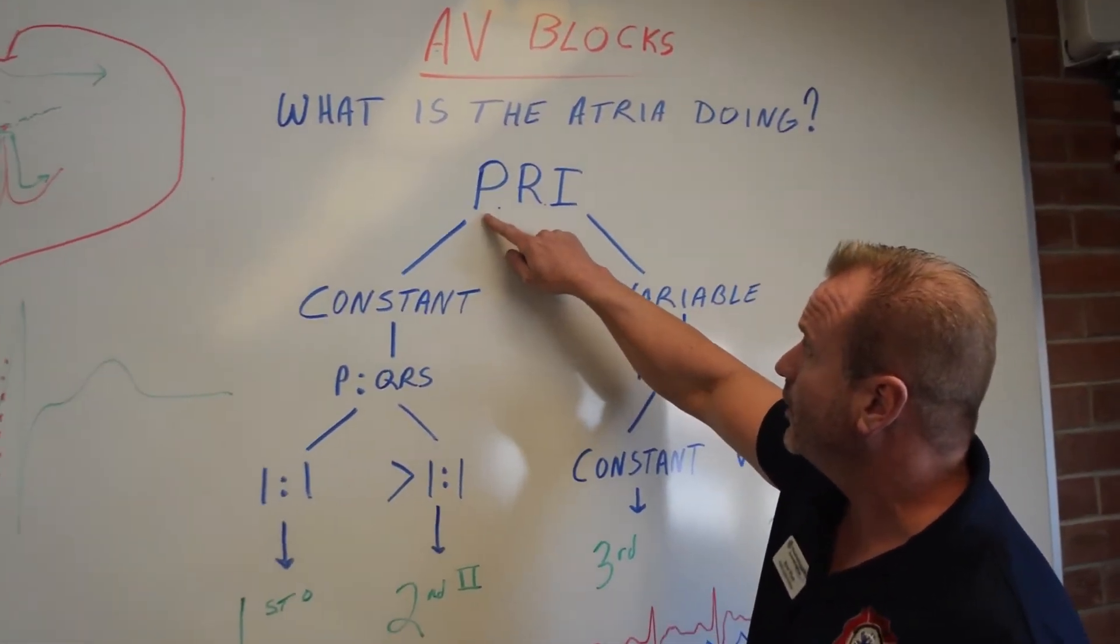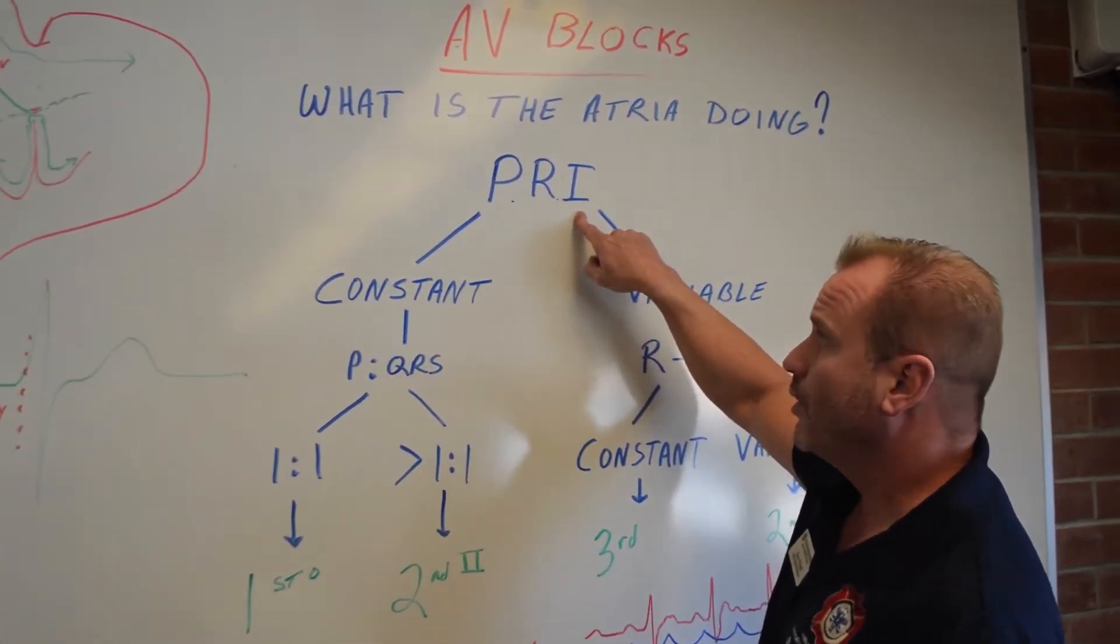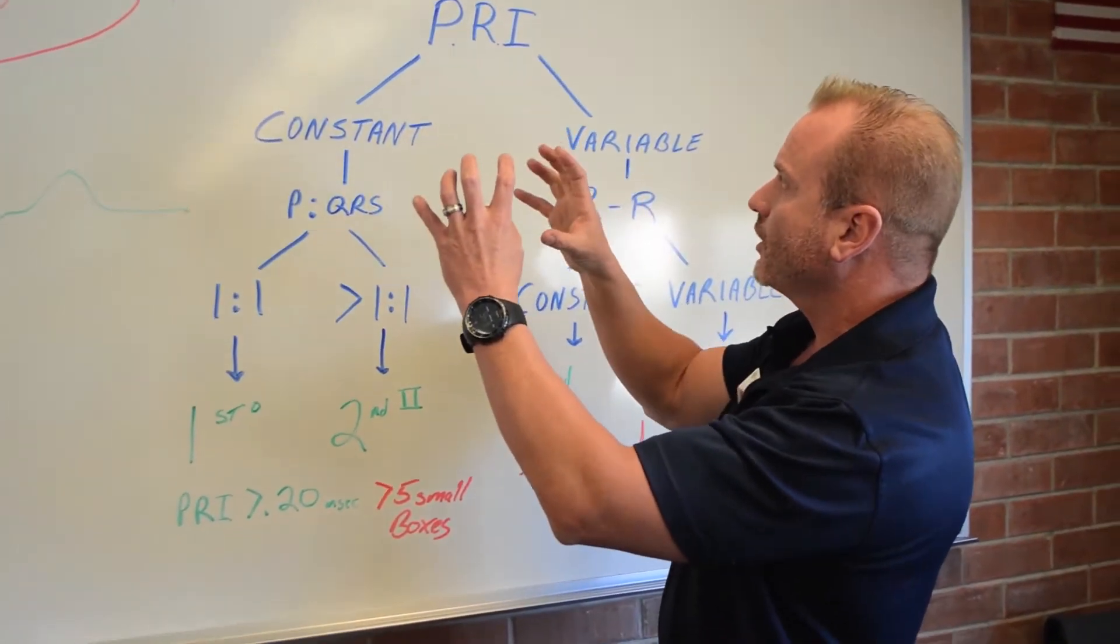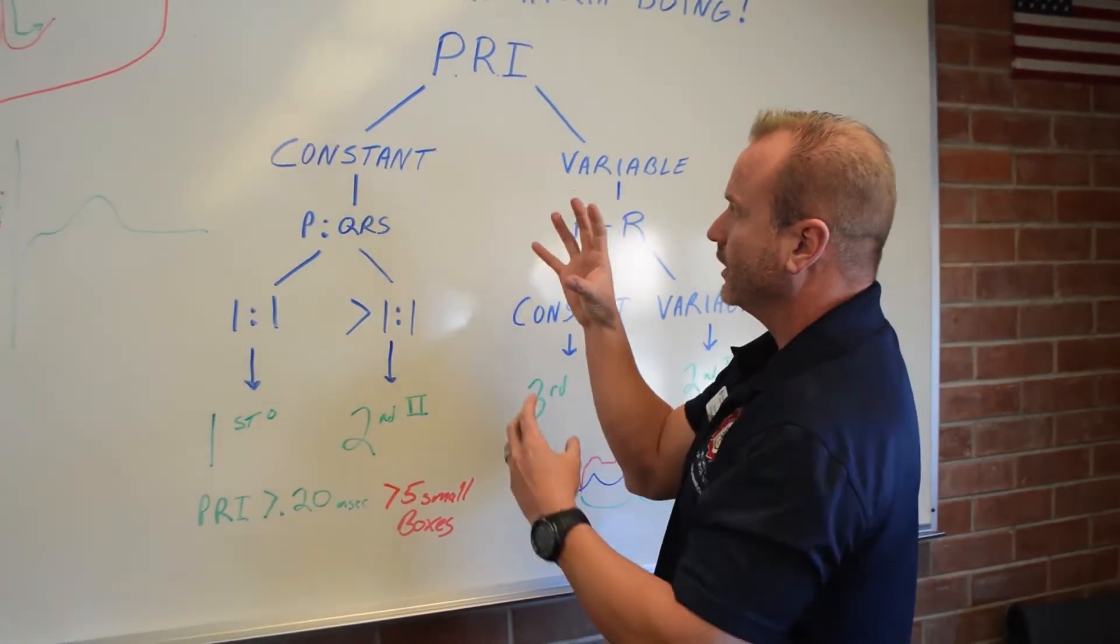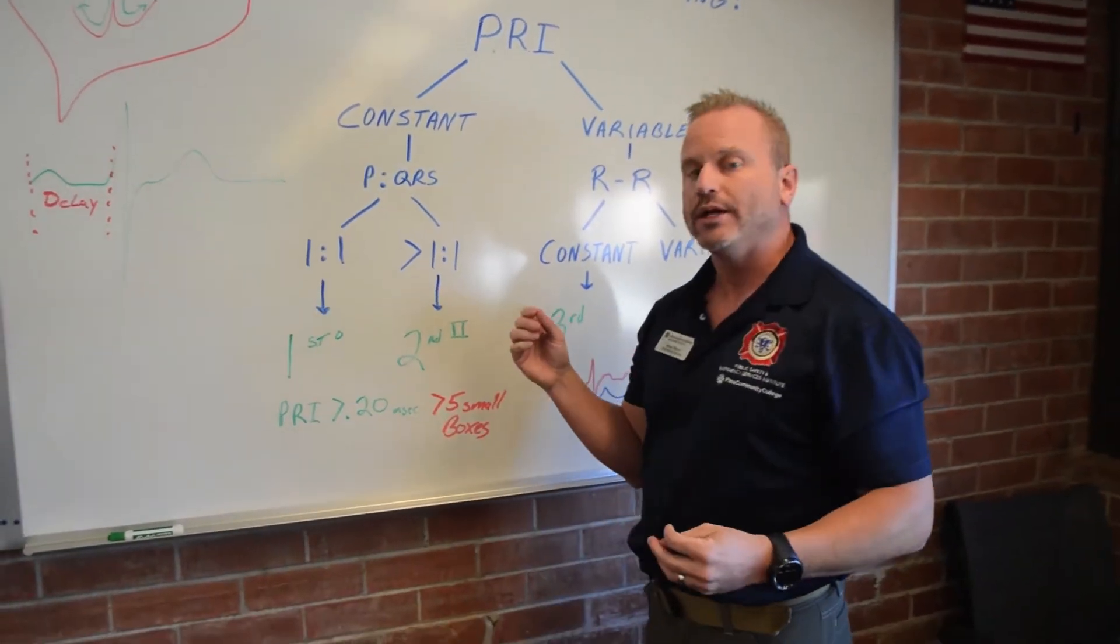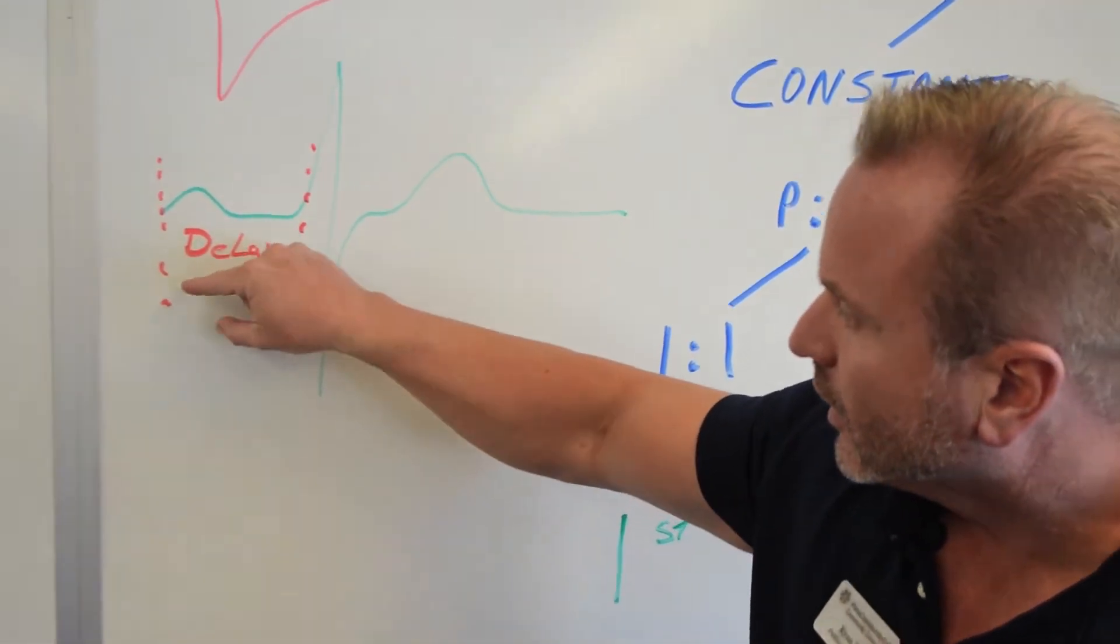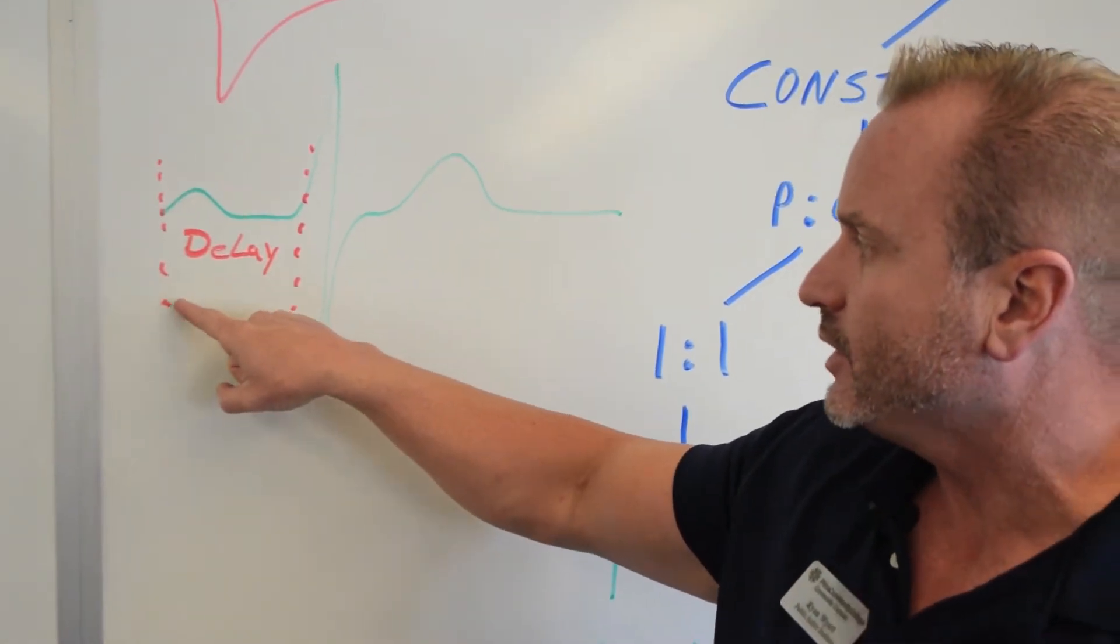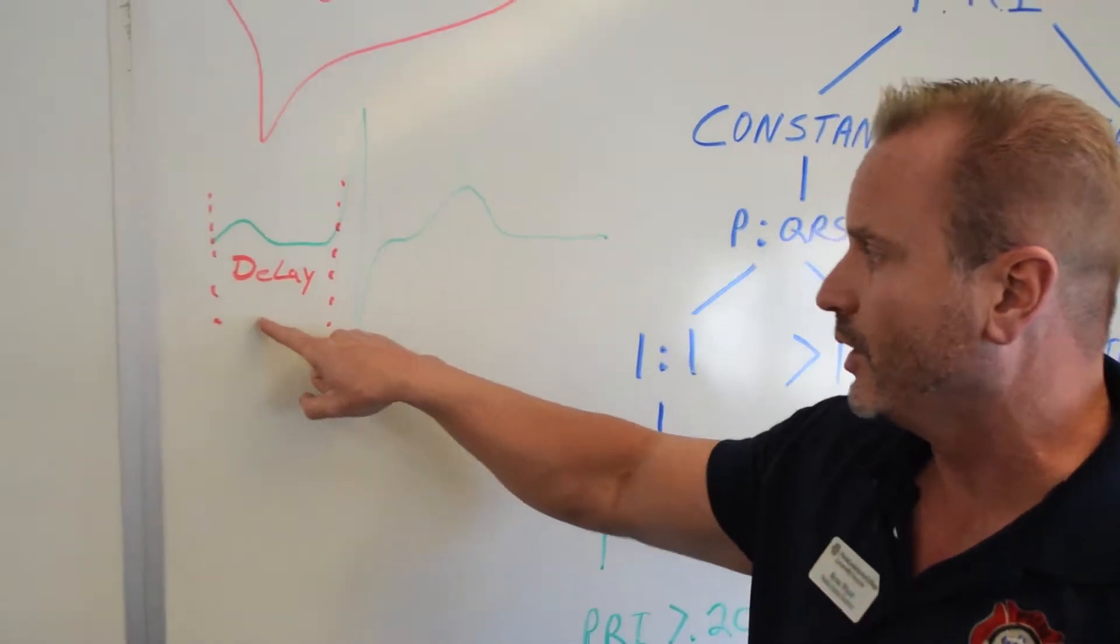So we look at the thing called the PRI, the PR interval. When the SA node fires and that atria contracts, what is our interval from the QRS, from the ventricle contracting? And we like that to be under 0.20. So we like that to be under 0.20 or five of the small boxes on your EKG going left to right.